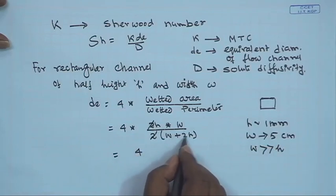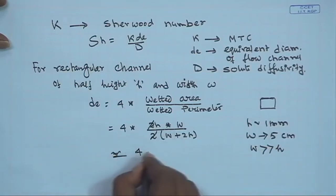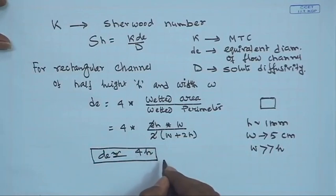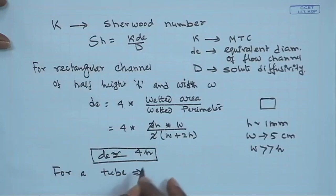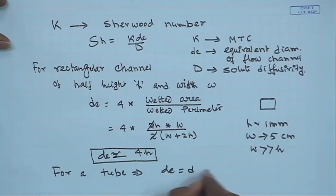Because w >> h, the w terms cancel and one obtains d_e ≈ 4h, i.e., four times the half-height of the channel. For a tube or pipe, the equivalent diameter equals the internal diameter. Flow through a channel is analogous to flow through a spiral wound module, while flow through a tube corresponds to flow through hollow fibers or a tubular module.